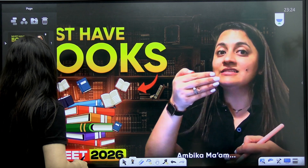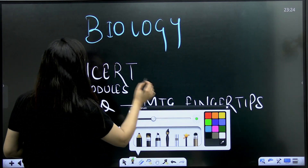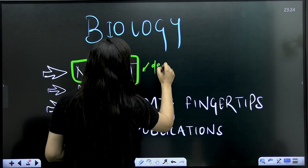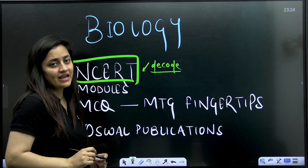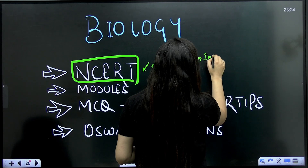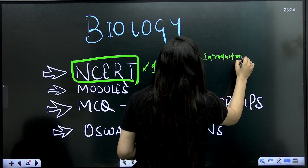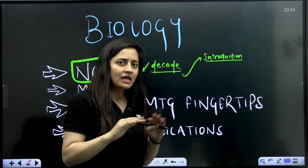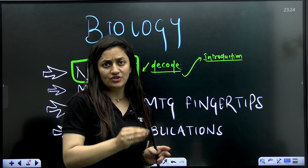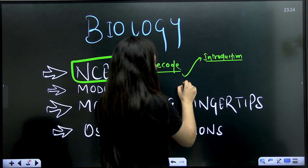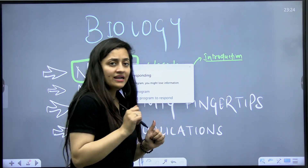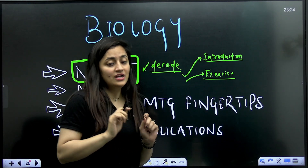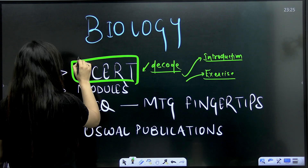For biology, there is no doubt that we cannot skip NCERT. We have to master and decode NCERT — understand each and every line and word. Don't forget about the introductions; complete your chapter first, then read the introduction and pick up any important lines. Secondly, do not miss the exercise questions given at the end of each chapter.